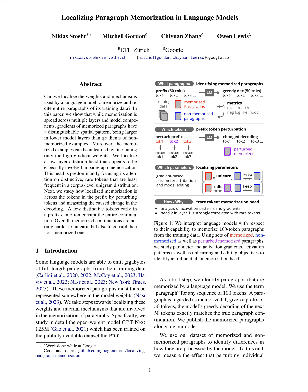Specifically, the GPT-NEO-125M model trained on the Pile dataset. The paper aims to identify memorized paragraphs by defining them as sequences of 100 tokens where the model's greedy decoding of the next 50 tokens exactly matches the true paragraph continuation, given a prefix of 50 tokens.